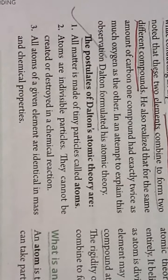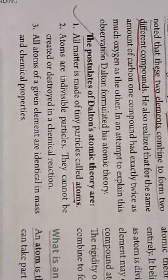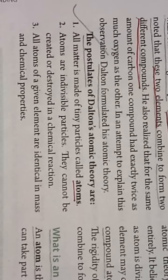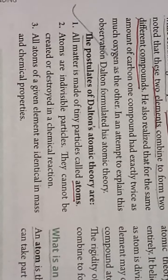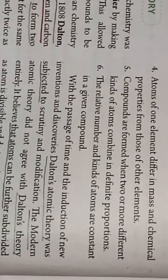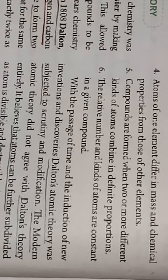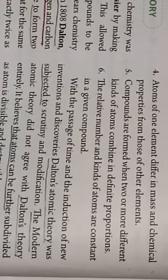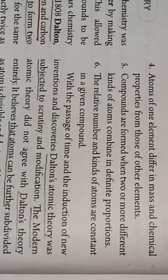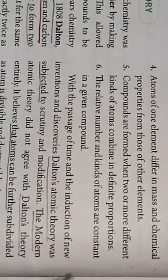What are they? All matter is made up of tiny particles called atoms. Atoms are indivisible particles; they cannot be created or destroyed in a chemical reaction. All atoms of a given element are identical in mass and chemical properties. The atoms of one element differ in mass and chemical properties from those of other elements. Compounds are formed when two or more different kinds of atoms combine in a definite proportion. The relative number and the kinds of atoms are constant in a given compound.